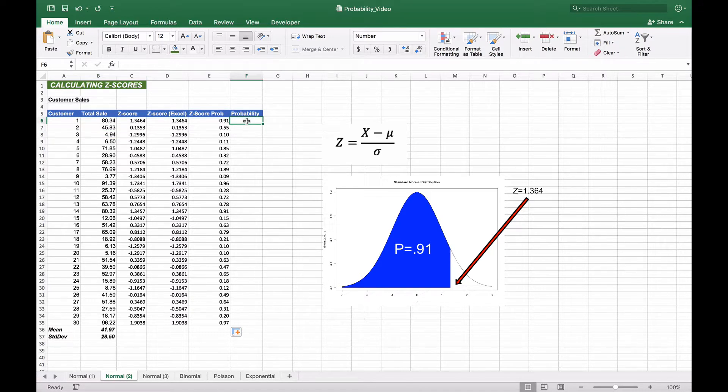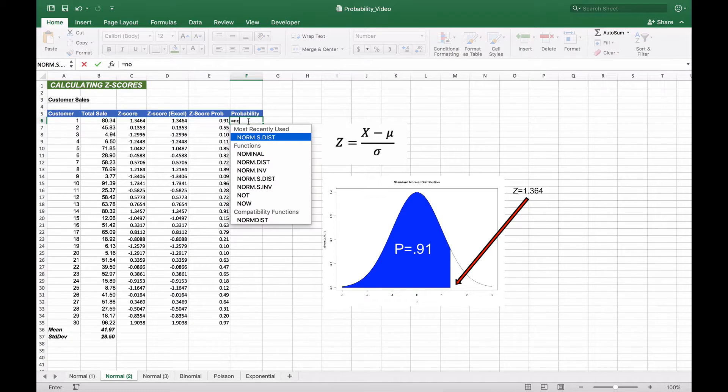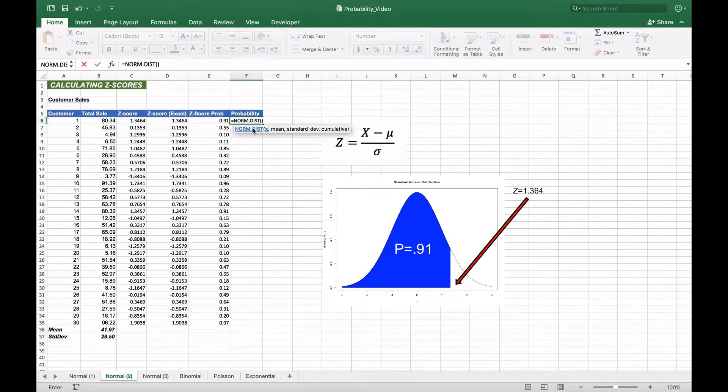Now let's assume that we're not, we don't have a z-score, but we only have the total sale numbers. Well, we can still calculate the probability under the curve, again assuming that it's normal, by using the NORM.DIST function. Now when we use the NORM.DIST function, it says the first parameter is going to be the x value, which is going to be in this case our total sale.